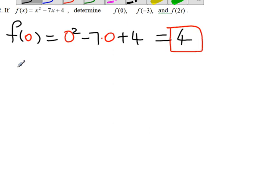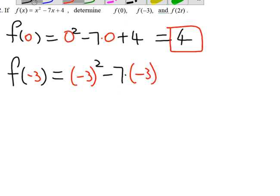The next one is f(-3), which equals (-3) squared minus 7 times (-3) plus 4.